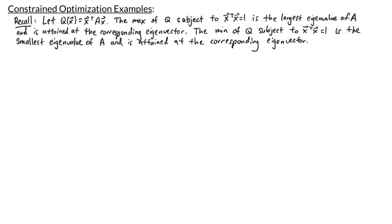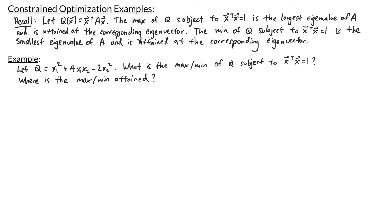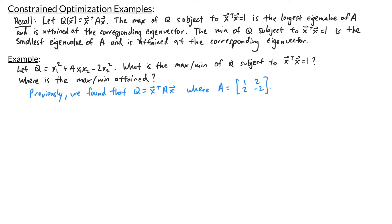So now let's look at an example. We have the quadratic form x1 squared plus 4x1x2 minus 2x2 squared. What is the maximum and minimum value of q subject to x transpose times x equals 1? Where is the maximum and minimum attained? This quadratic form we've actually looked at in a previous video. We previously found that the matrix for this quadratic form is the matrix 1, 2, 2, negative 2.